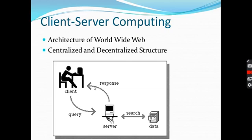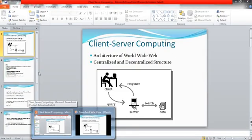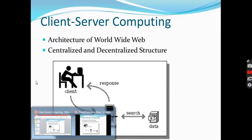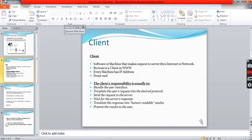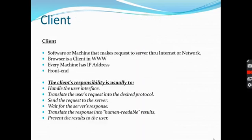This is a real-time view of client-server structure. What is a client? A client is basically a software or machine that makes requests to a server through the internet or network. The browser is the client — it can be a laptop, desktop, tablet, or mobile device.